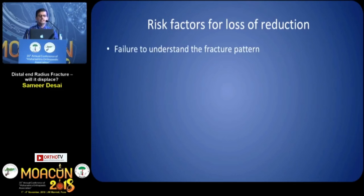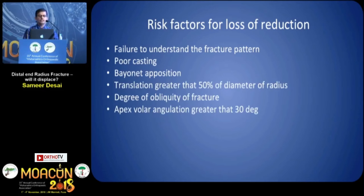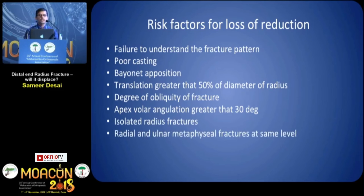Going into details, it could be because of failure to understand the fracture pattern, poor casting technique, bayonet apposition, translation greater than 50% of the diameter of the radius, oblique fracture, apex volar angulation greater than 30 degrees, isolated radius or isolated ulna fracture, radial and ulnar metaphyseal fractures at the same level, and of course the quality of reduction.